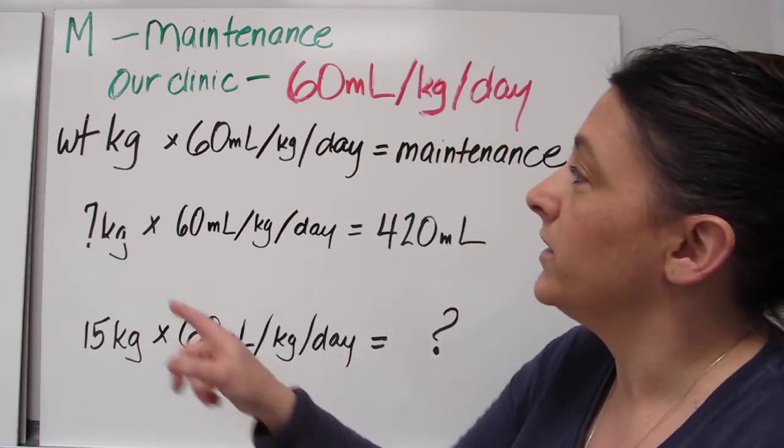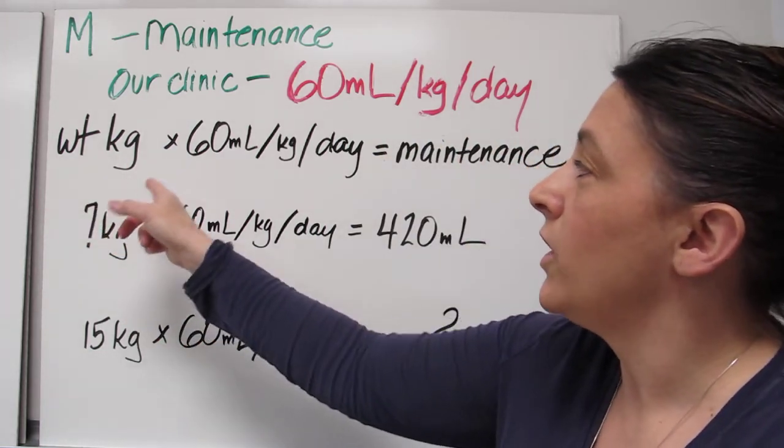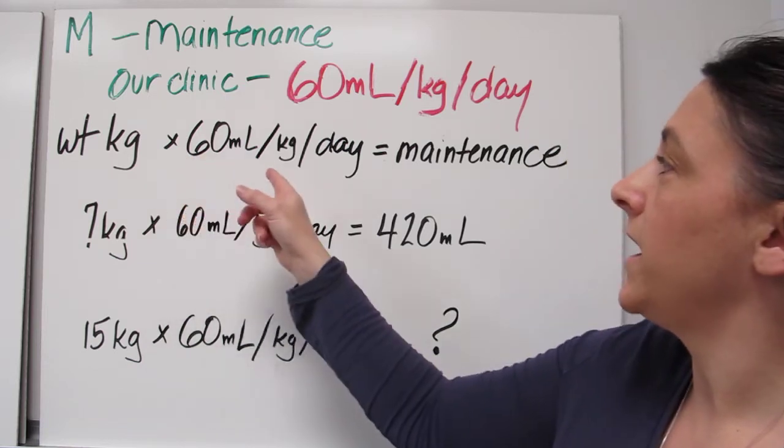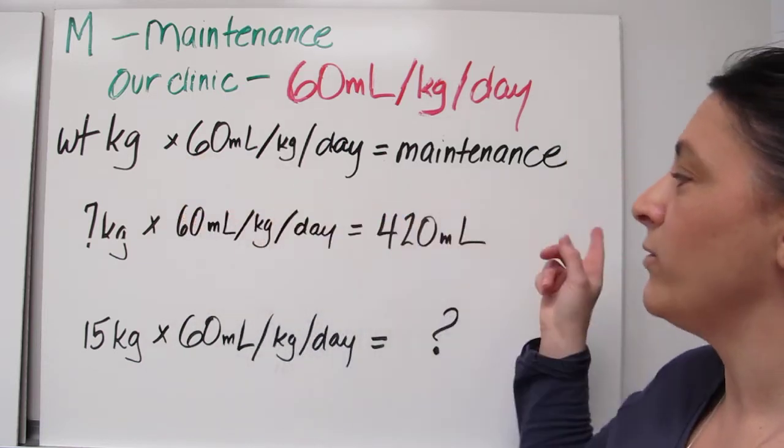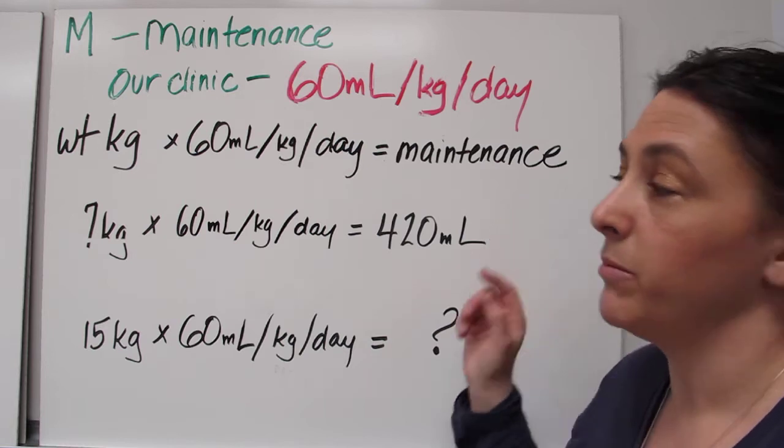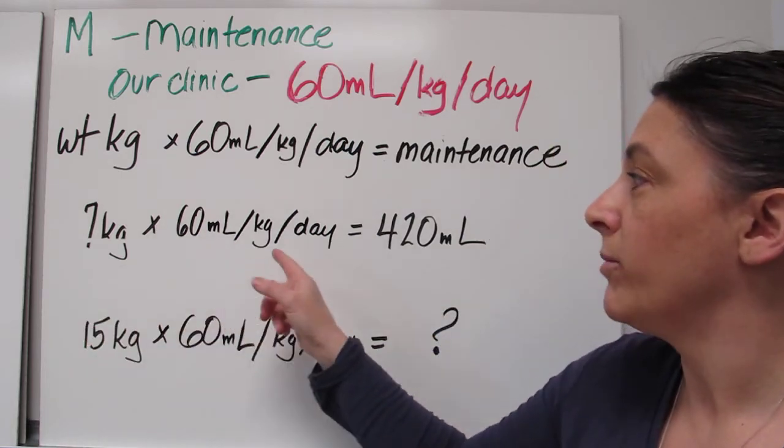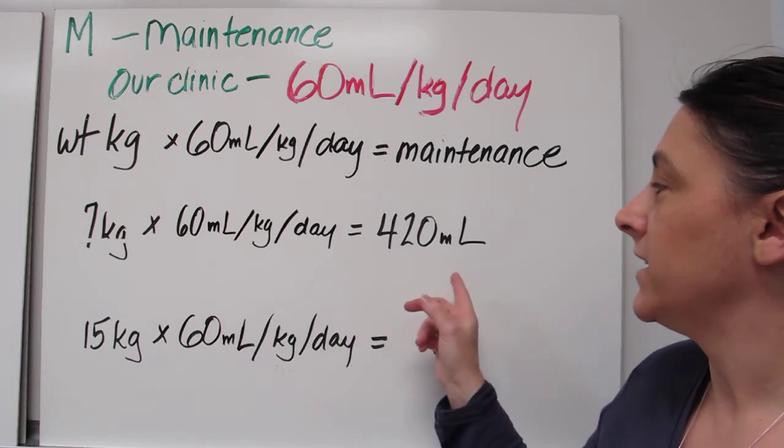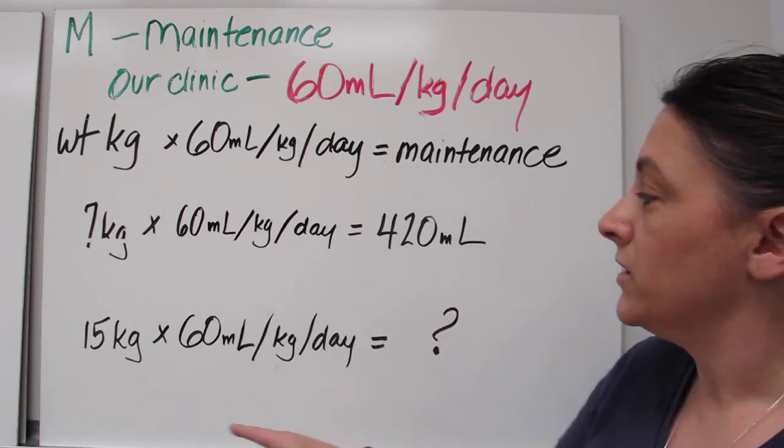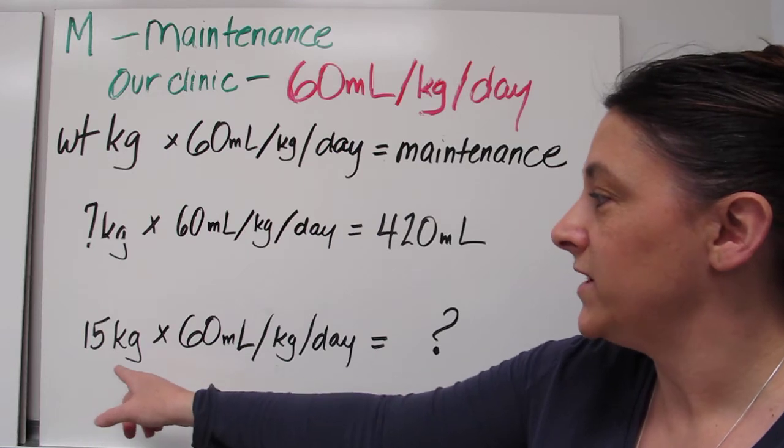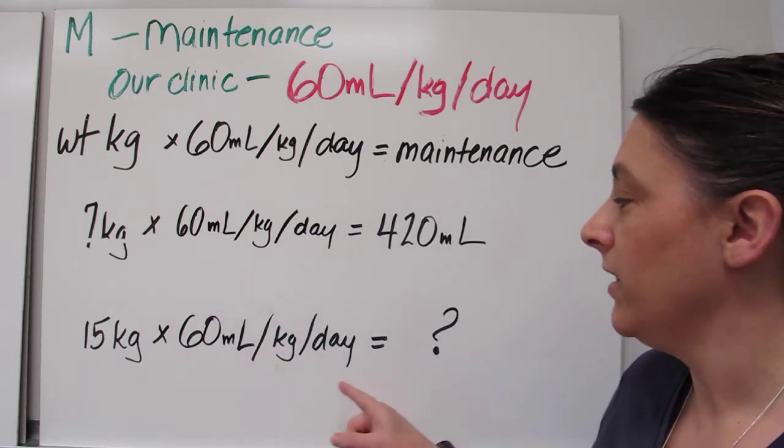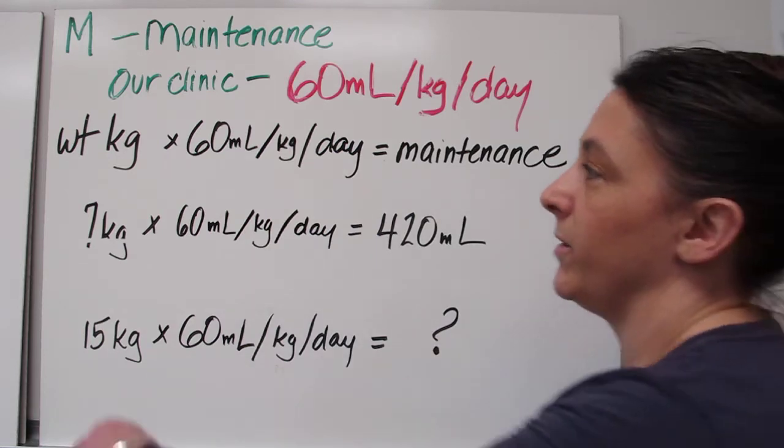Now how we calculate it out is we take the weight in kilograms. We times it by 60 mL per kg per day and that will give us our maintenance rate. Pretty simple. So we are going to take our 7 kgs times 60 mL per kg per day and that is going to give us 420 mL. So now you do your number, 15 kg times 60 mL and what number does that come up to be?